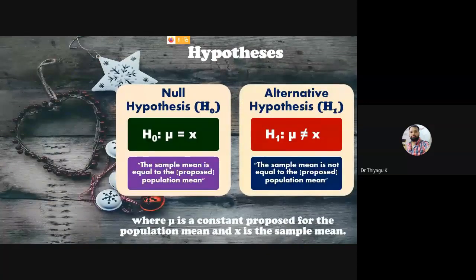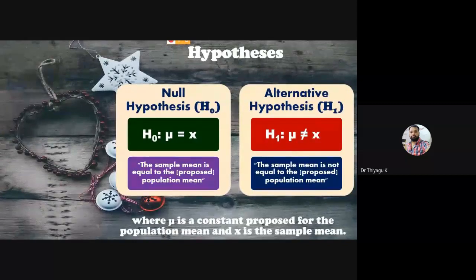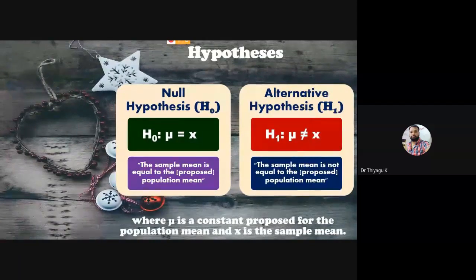Now, how do we make the hypothesis for a one-sample t-test? The null hypothesis states that the sample mean is equal to the population mean — there is no significant difference between the sample mean and the population mean. The alternative hypothesis is the opposite: the sample mean is not equal to the population mean, meaning there is a significant difference between the sample mean and the population mean.